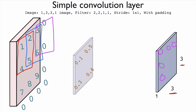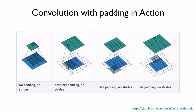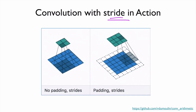This animation shows how convolution works in action. Using a filter, we move around the entire image, compute one value, and create the feature map. Different sizes of padding can generate different sizes of feature maps. For stride, in our previous example we used stride 1, meaning we move one step at a time, but we can also move two or three steps — this is called the stride.